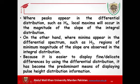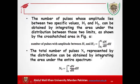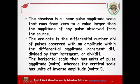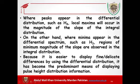On the other hand, where minima appear in the differential spectrum — such as at H3 — regions of minimum magnitude of slope are observed in the integral distribution. H3 corresponds to a valley: minimum height in the differential gives a straight, low-slope region in the integral. Because it is easier to display fine, delicate differences using the differential distribution, it has become the predominant means of displaying pulse height distributions.